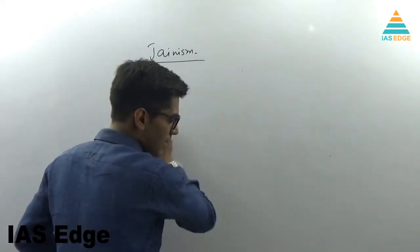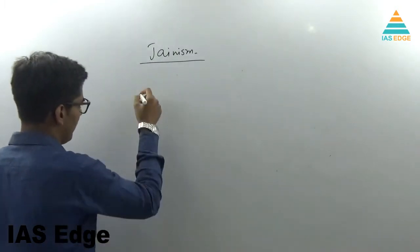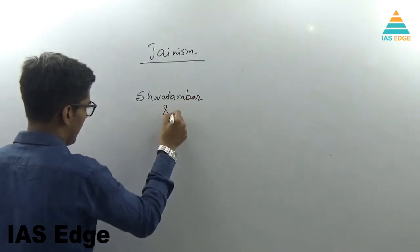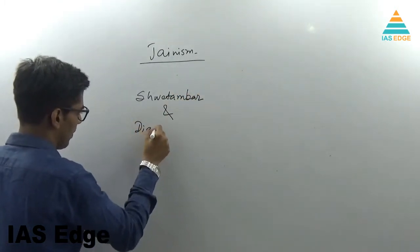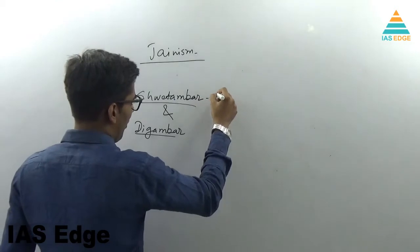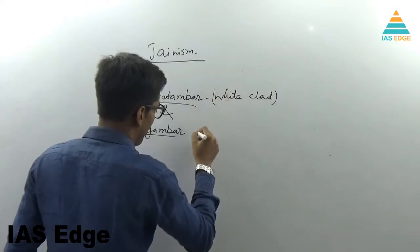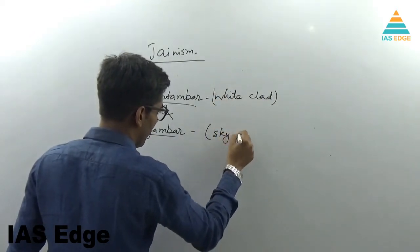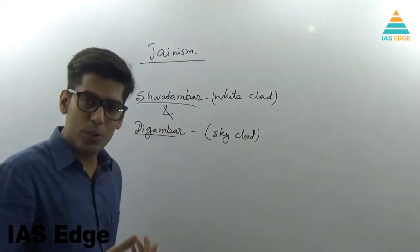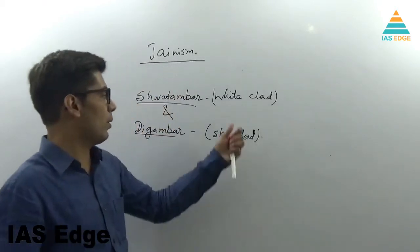So Jainism has asked its followers to follow a certain lifestyle. And there are two main divisions of Jainism: Shwetambar and Digambar. Shwetambar are the white clad. Shwetambar are those Jainists who wear only white clothes. They don't wear any other color. That's why they are called white clad.